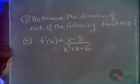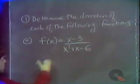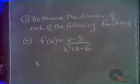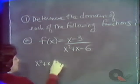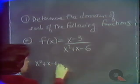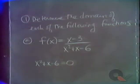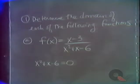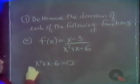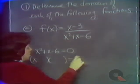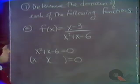Bearing that in mind, we take the approach of: what would mess this function up? Division by zero. So what do we have to look out for? We have to watch out if the denominator is equal to zero. We set this denominator equal to zero and get a quadratic equation, which can be solved by factoring.